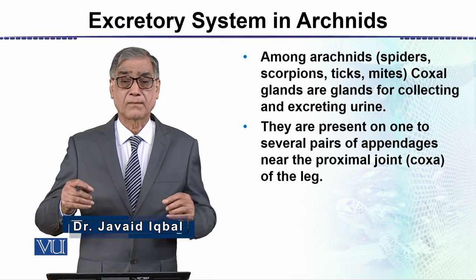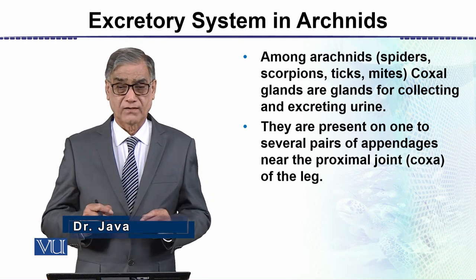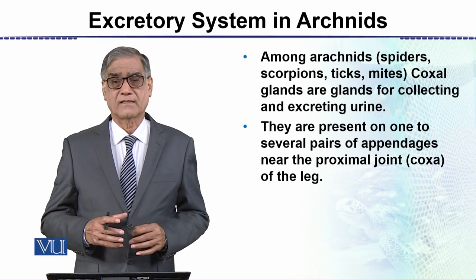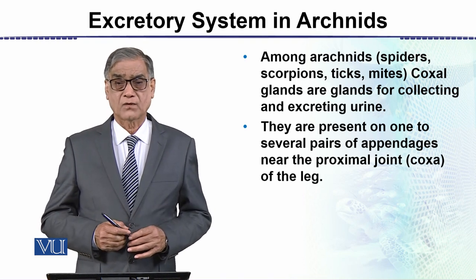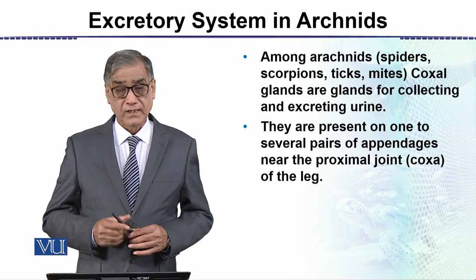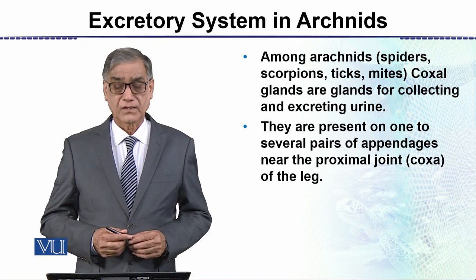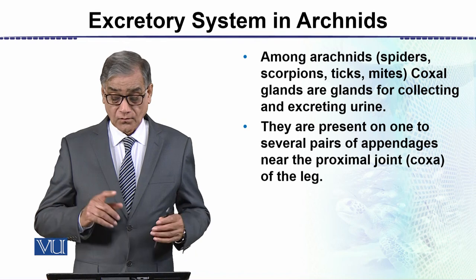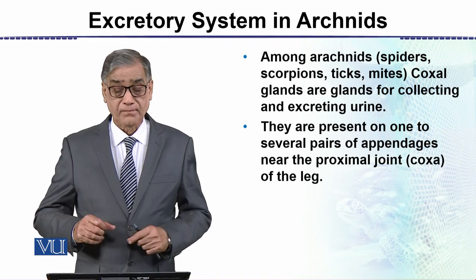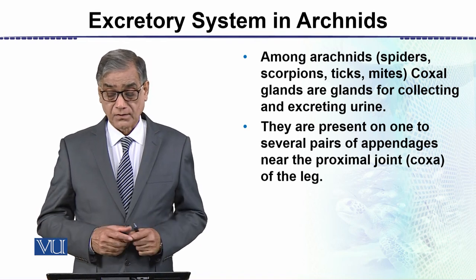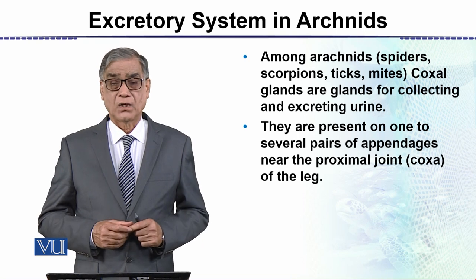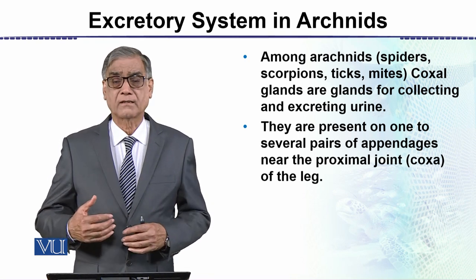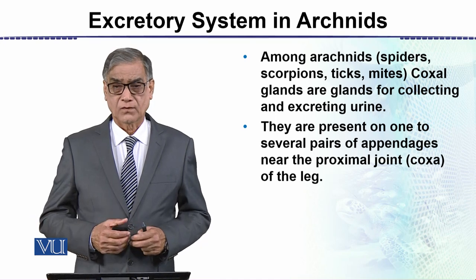In the legs, the proximal joint — which is called the coxa — has glands called coxal glands. These coxal glands serve an excretory function. They are present on one to several pairs of appendages near the proximal joint of the leg.